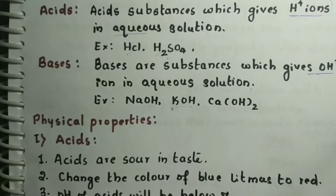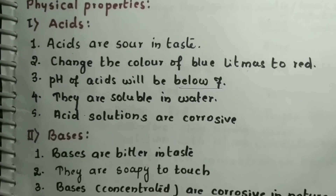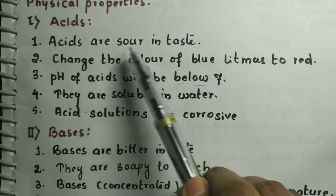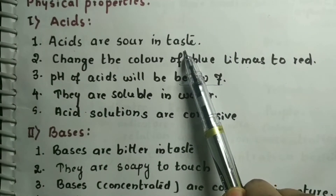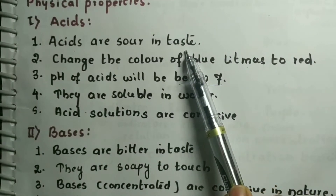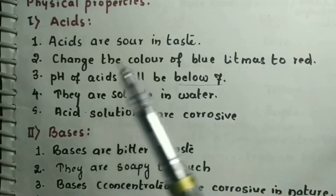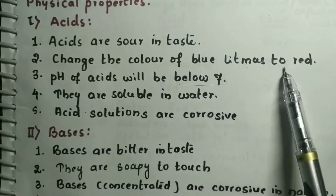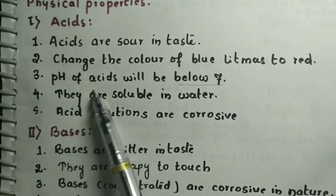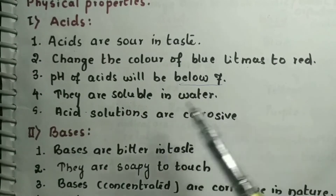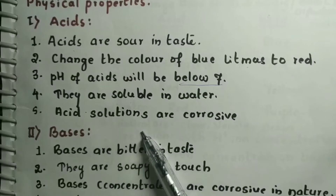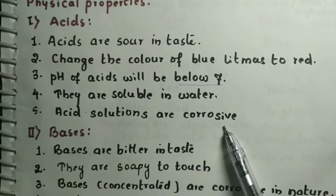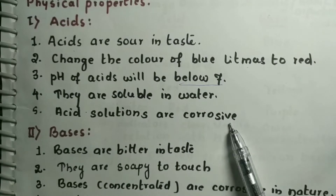Let us see the physical properties of acids. Acids are sour in taste — we have seen that lemon and other citrus fruits are sour because of the presence of acids. They change the color of blue litmus to red. The pH of acids is below 7. They are soluble in water. Acid solutions are corrosive — meaning they have the capacity to damage things they come into contact with.